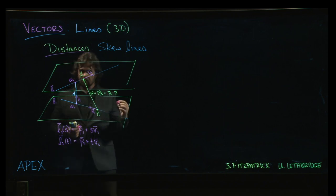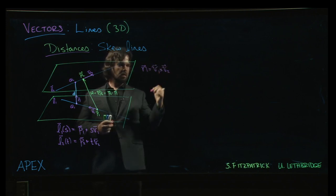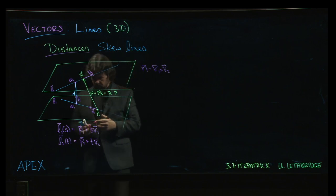Well, we know how to construct a vector that does that job. It's the cross product. So we can take V1 and cross it with V2.